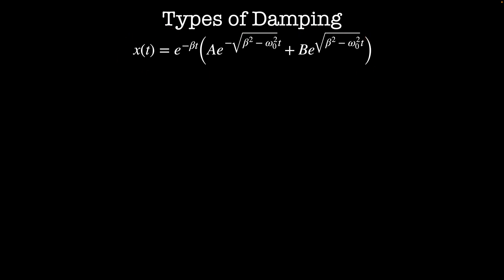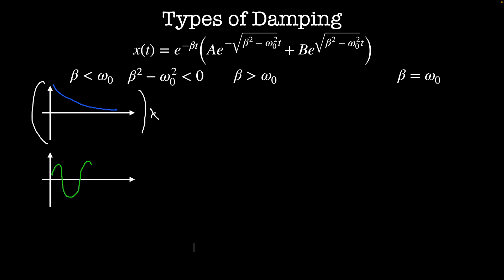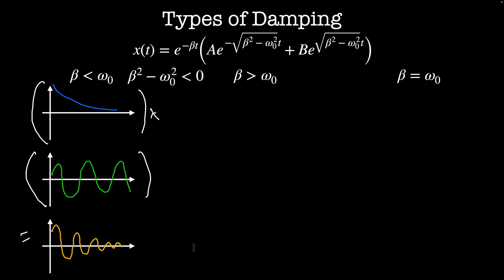Here is our equation of motion again, but this time I've pulled out the e^(-βt) term since it is purely exponential decay. I have three cases depending on whether β is less than, greater than, or equal to ω₀. When β < ω₀, the term inside the square root, β² - ω₀², is negative, giving imaginary solutions. The e^(-βt) term provides exponential decay, and multiplying it by the resulting oscillatory term gives a solution that looks oscillatory but with peaks exponentially decaying according to e^(-βt). This case is called underdamped.